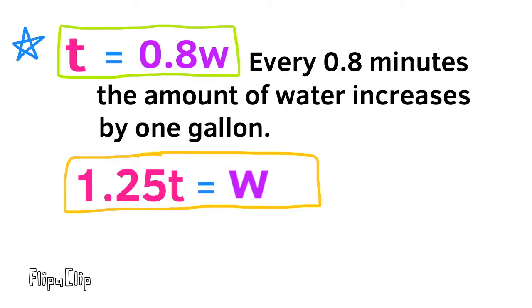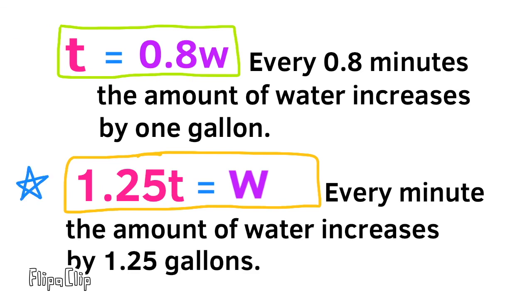For the equation t = 0.8w, the constant of proportionality tells me that for every 0.8 minutes, the amount of water increases by one gallon. For the equation w = 1.25t, the constant of proportionality tells me that for every minute, the amount of water increases by 1.25 gallons. Be sure to support my YouTube channel by liking this video, leaving a comment, and subscribing.